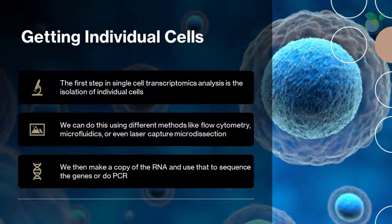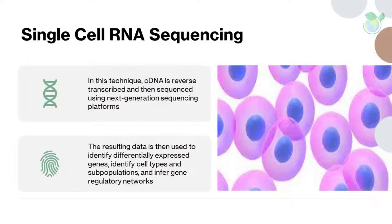The first step in single cell transcriptomics analysis is the isolation of individual cells. We can do this using different methods like flow cytometry, microfluidics, or laser capture microdissection. Once we have our single cells, we break them open and extract the RNA, which is like a blueprint for making proteins. We then make a copy of the RNA called cDNA and use that to sequence the genes or do PCR.